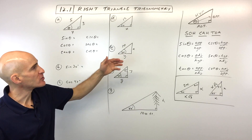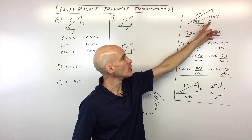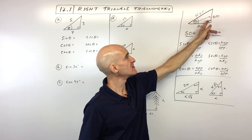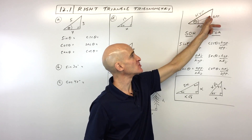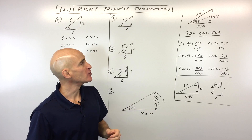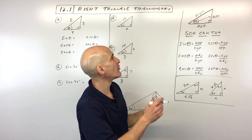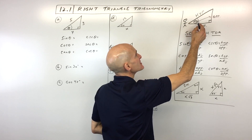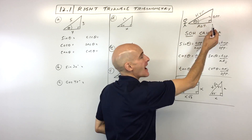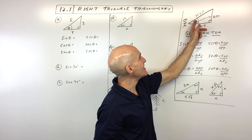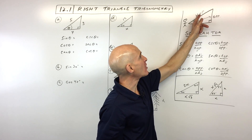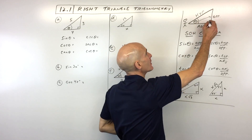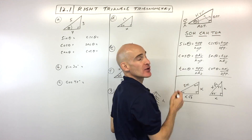When we talk about right triangle trigonometry, we're working with right triangles, which means that they have a right angle symbolized by this square here, representing these two sides are perpendicular. You position yourself at the particular angle that you're working with, and you think of the side that's across as the opposite side. The one that's next to the angle, but not across from the right angle, we call that the adjacent side. And the one that's diagonally across from the right angle, we call the hypotenuse — that's the longest side.